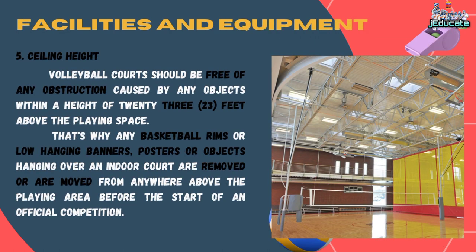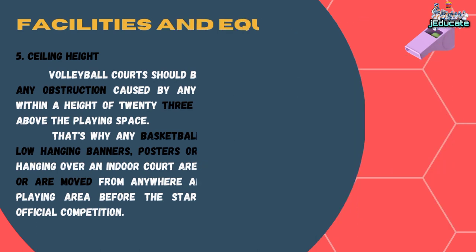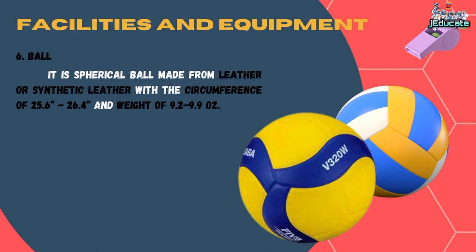Number 5, Ceiling Height. Volleyball courts should be free of any obstruction within a height of 23 feet above the playing space. That's why any basketball rims or low-hanging banners, posters, or objects hanging over an indoor court are removed from anywhere above the playing area before the start of an official competition. Number 6, Ball. It is a spherical ball made from leather or synthetic leather with a circumference of 25.6 to 26.4 inches and a weight of 9.2 to 9.9 ounces.